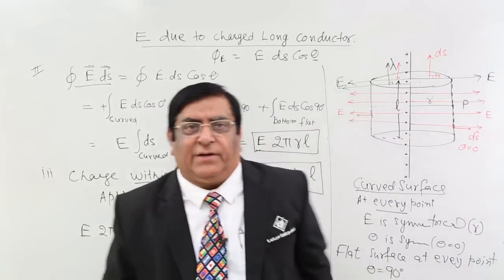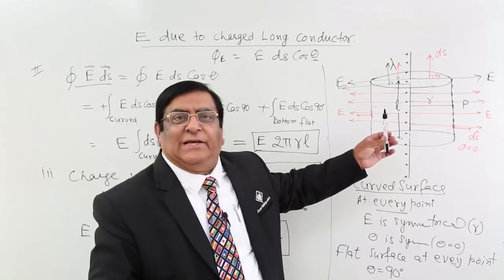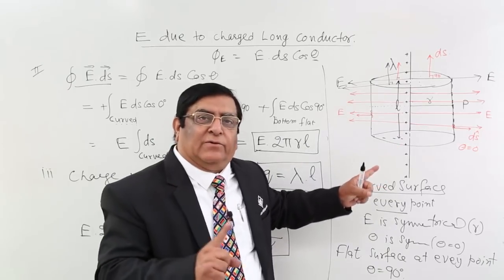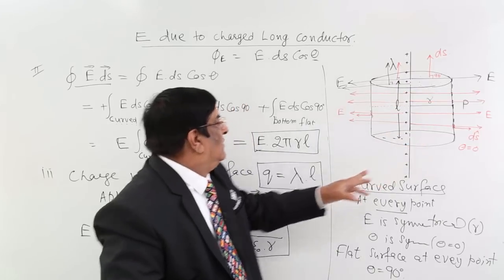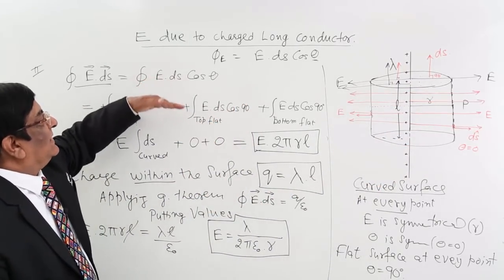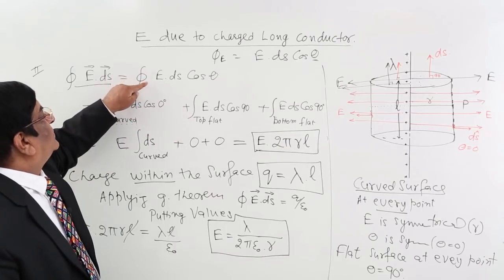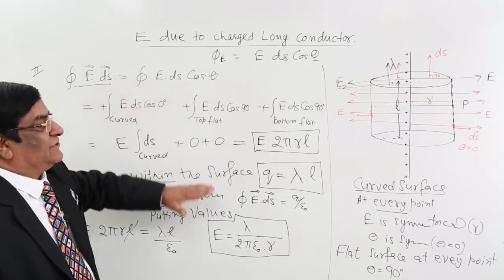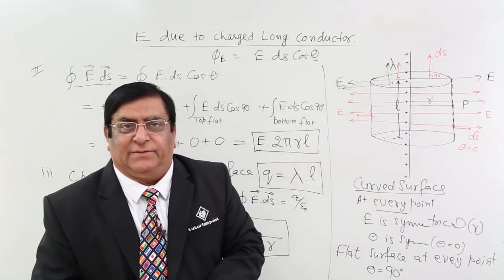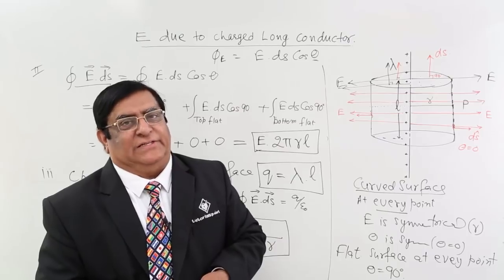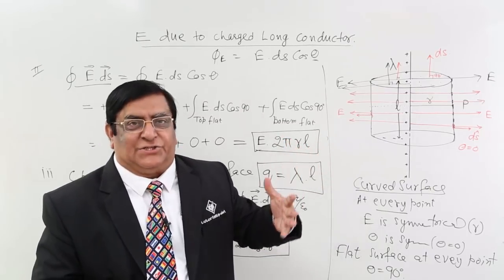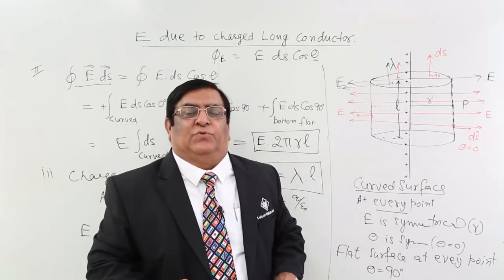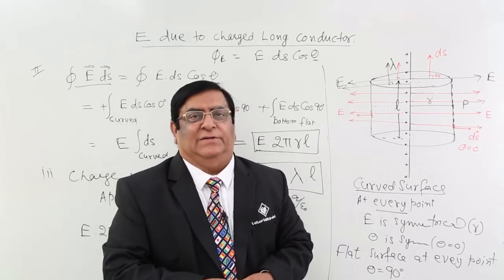This is a very important derivation and is normally asked in examinations. For a straight line charge, a cylinder is the Gaussian surface; the cylinder has two symmetries — one for the curved surface and one for the flat surfaces — so we do the calculation in three parts. Getting this by Coulomb's law would be a much longer process, but Gauss's theorem gives it in just a few steps. In the next lecture, we will find the electric field due to an infinite ball filled with charges. Thank you.